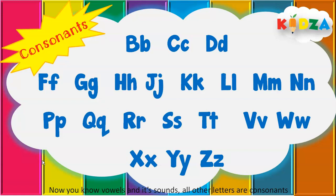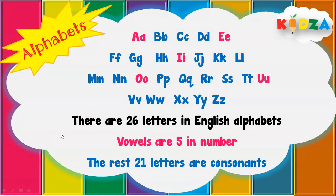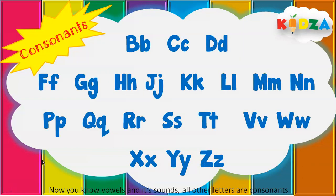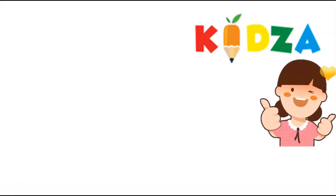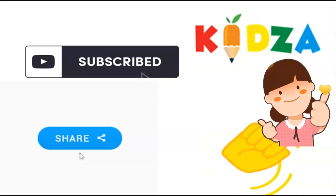All the other letters in the alphabet apart from A, E, I, O, U are called consonants. Let's read them: B C D F G H J K L M N P Q R S T V W X Y Z — these are consonants. So, there are 26 letters in the English alphabet: vowels are five in number and the remaining 21 letters are consonants. Well done, children! For more such videos, subscribe, like, and share. Thank you.